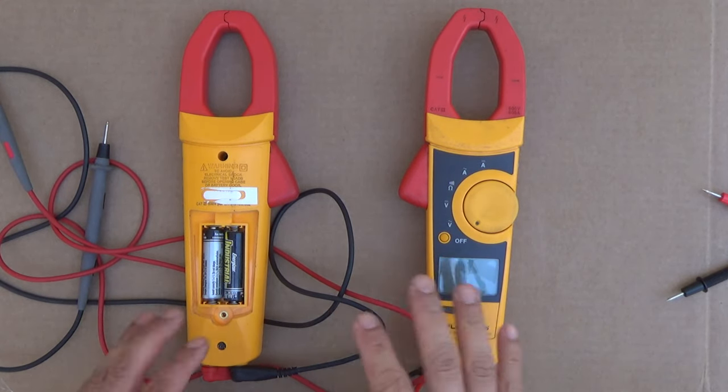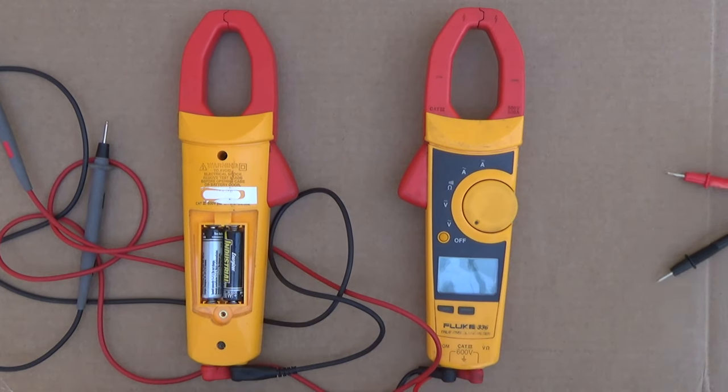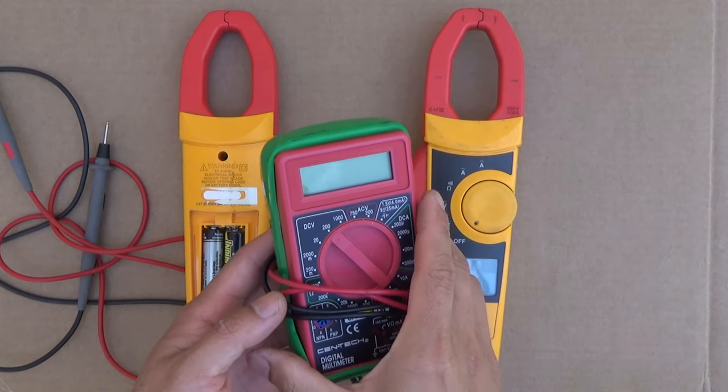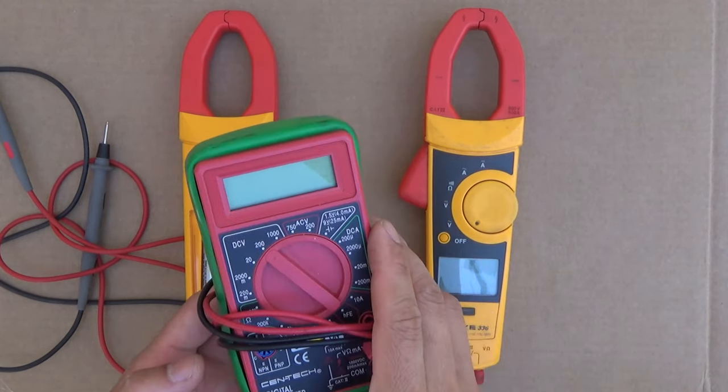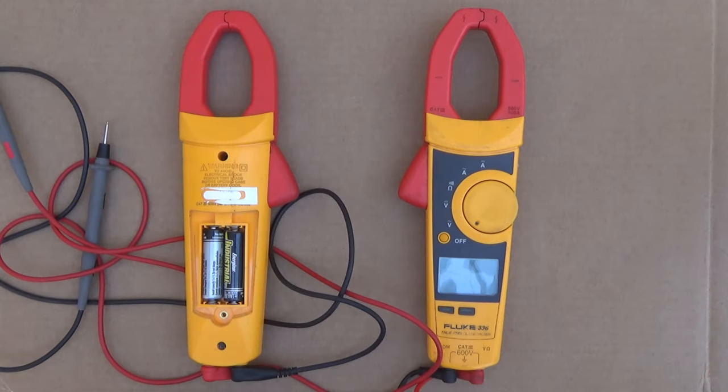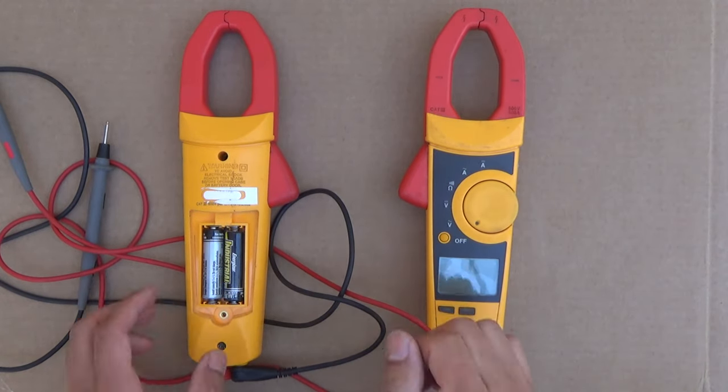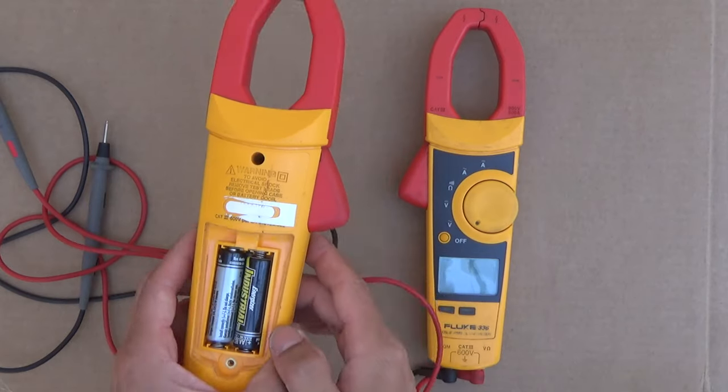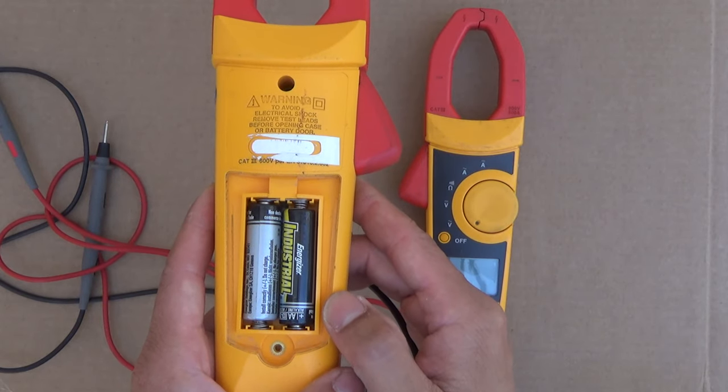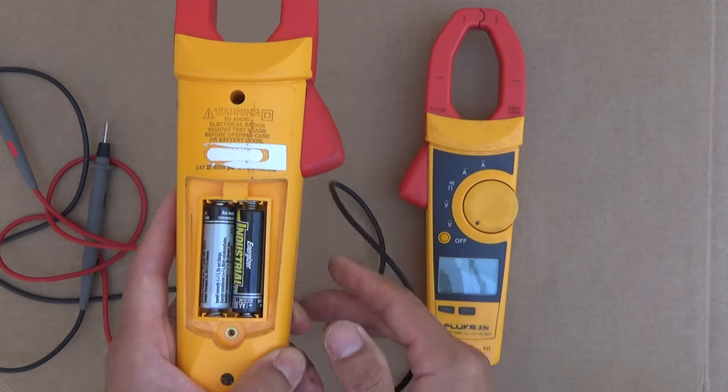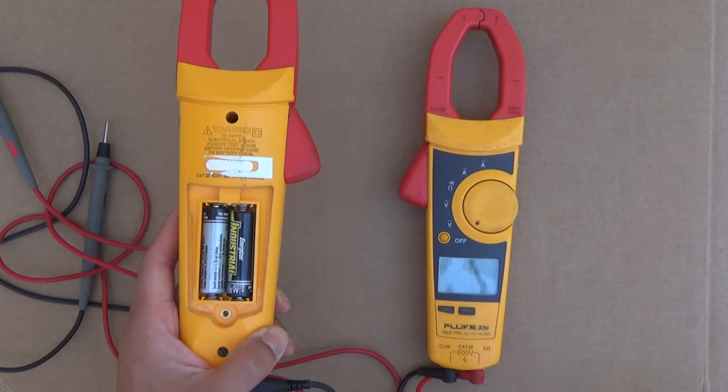So first let's take a look at these two clamp meters. Unlike traditional multimeter which is powered by a 9V battery, this Fluke clamp meter is powered by two AA batteries. So it is a lot cheaper to replace and this battery is easier to find too.